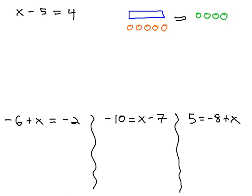And again, like last time, our goal is going to be to get the x alone, that x strip to find out what value it weighs. But it's hanging out with these 5 negative circles.